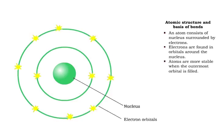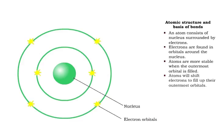Atoms are most stable when their outermost orbital is filled. Usually, the outermost orbital contains eight electrons. If an atom's outermost orbital is not filled, electrons will move to fill this shell.